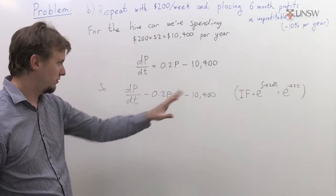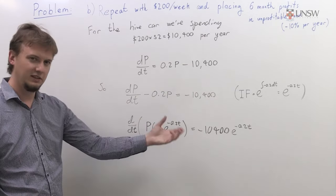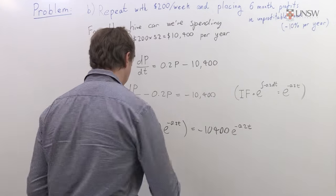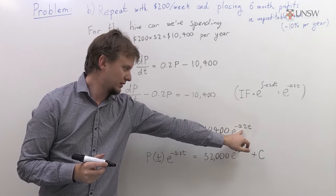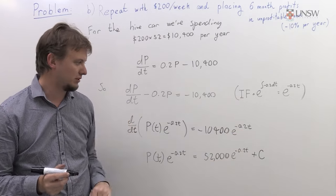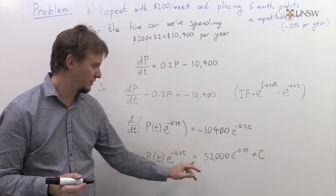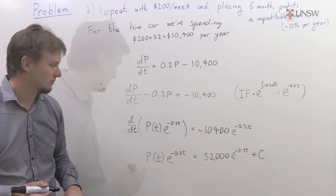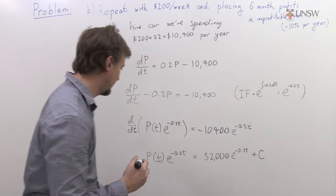If we multiply by the integrating factor, then this just becomes, and we can easily integrate both sides of this equation to get the following. Note that when I integrate this, I have to divide by minus 0.2, but that's actually the same as multiplying by minus 5, so it's just minus 5 times the previous term.